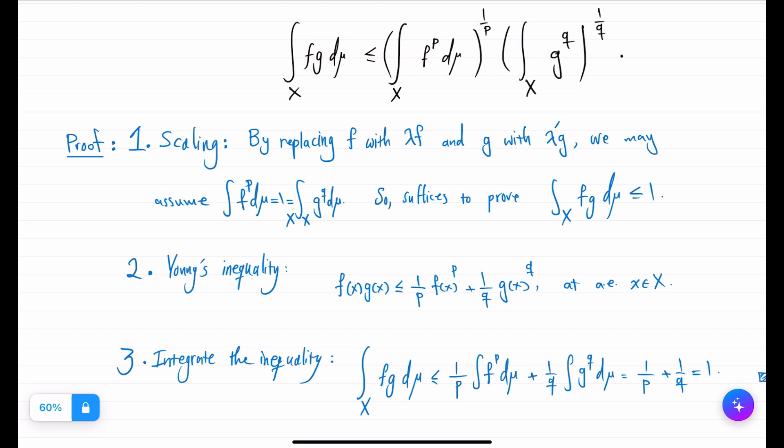And then the key point where inequality comes in is Young's inequality, which says that for any two numbers, their multiplication is less than this particular summation of pth power and qth power of them.